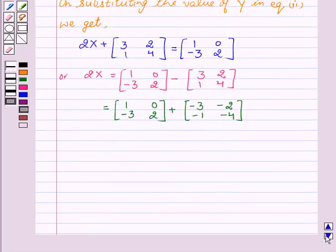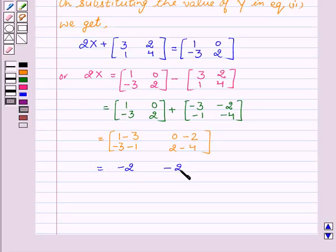This can be written as [1 minus 3, 0 minus 2, minus 3 minus 1, 2 minus 4]. This is equal to [minus 2, minus 2, minus 4, minus 2].